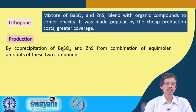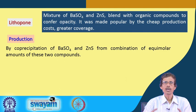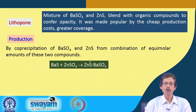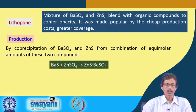Production involves the coprecipitation of barium sulfate and zinc sulfide — an equimolar mixture of these two white compounds gives lithopone. The reaction is between barium sulfide and zinc sulfate, which coprecipitate together. They are not physically mixed; rather, they are produced together in solution from barium sulfide and zinc sulfate.